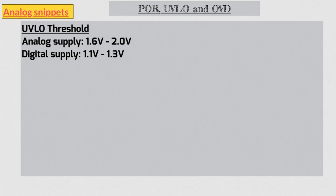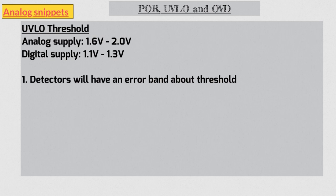First, even if you trim your detectors, there will be a tolerance to which they will be accurate. There can be various sources of error, for example error in the trimming process or drift of the reference voltage itself. For our example, let's assume an error tolerance of plus minus 10 millivolts. Second point is that these detectors always have some hysteresis associated with them. For our example, let's assume a hysteresis of 50 millivolts for the analog supply and 25 millivolts for the digital supply.